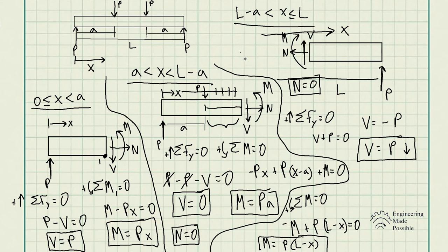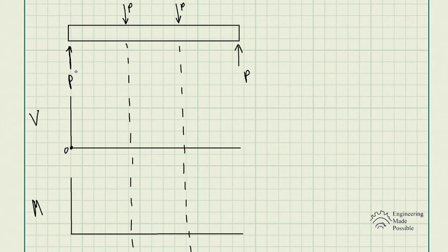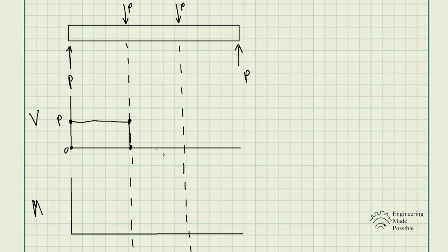Now let's go over the convention for drawing the diagrams. I've redrawn the beam with the external forces P. We have a shear force diagram (V) and a moment diagram (M) plotted below the beam. At the starting point zero, the reaction force P acts upward, so the shear begins at positive P.